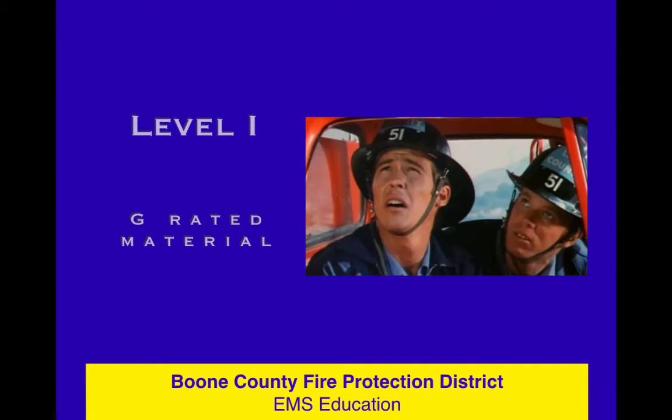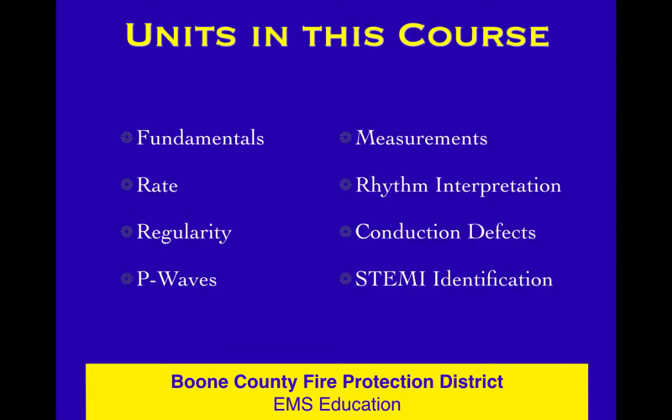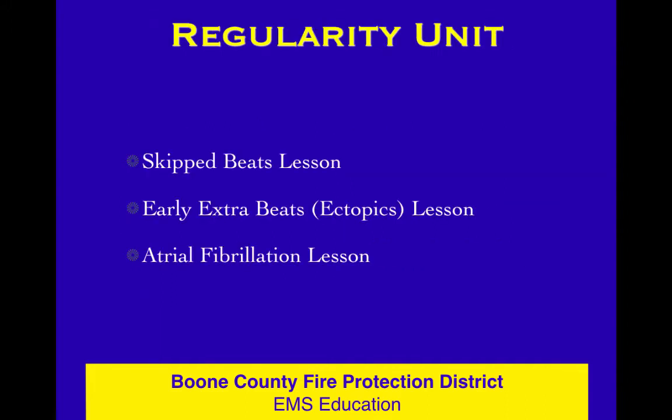Continuing on the EKG course, Level 1 stuff. We have covered the fundamentals and rate units, and now we're heading to regularity — the other R word in our analysis plan. The regularity unit has three simple lessons: one about skipped beats, one about early beats, and then everybody's favorite, atrial fib — the king of the irregular rhythms.